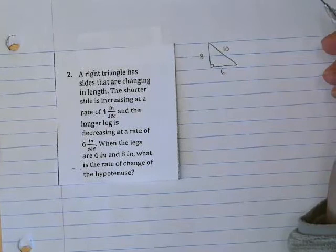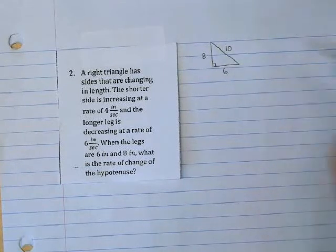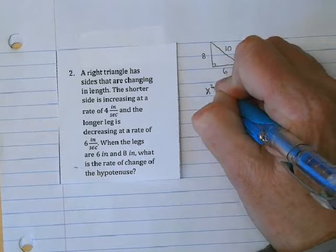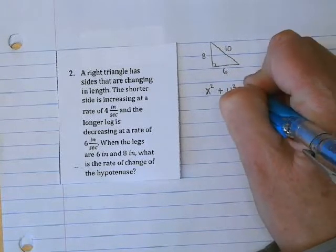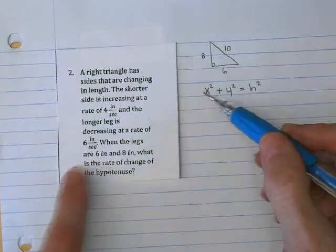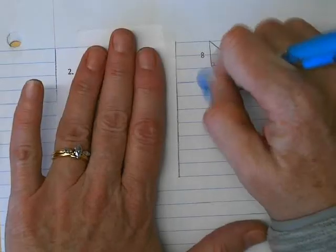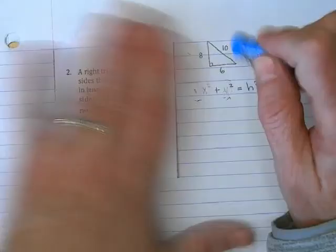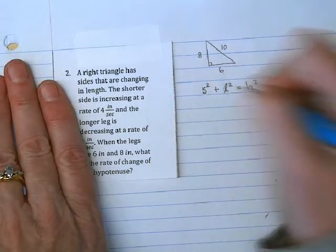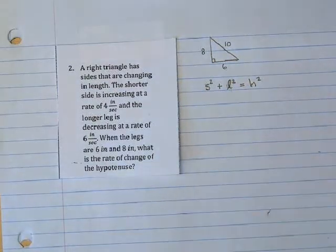What are the things that I know? Well, I know when I do one of these that leg squared plus leg squared is hypotenuse squared. Since the problem gave us the shorter leg and the longer leg, let's do S and L. So the shorter leg squared plus the longer leg squared equals H squared. That's what we know.